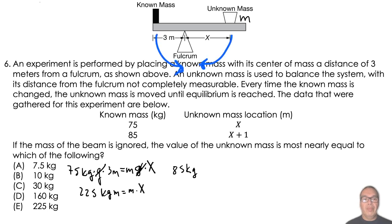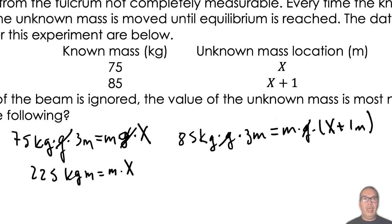In the second case, equilibrium is given by the equation 85 kilograms times G times 3 meters is equal to M times G times X plus 1 meters. Once again, we can cancel G and we have 255 kilogram meters is equal to M times X plus M times 1 meter.